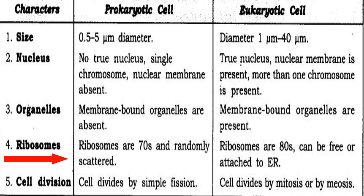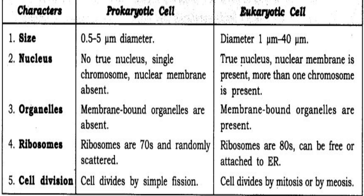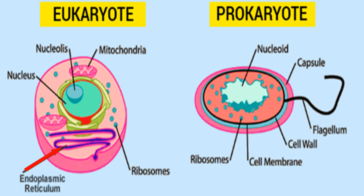Prokaryotic cells have smaller ribosomes and eukaryotic cells have larger ribosomes than those of prokaryotes.